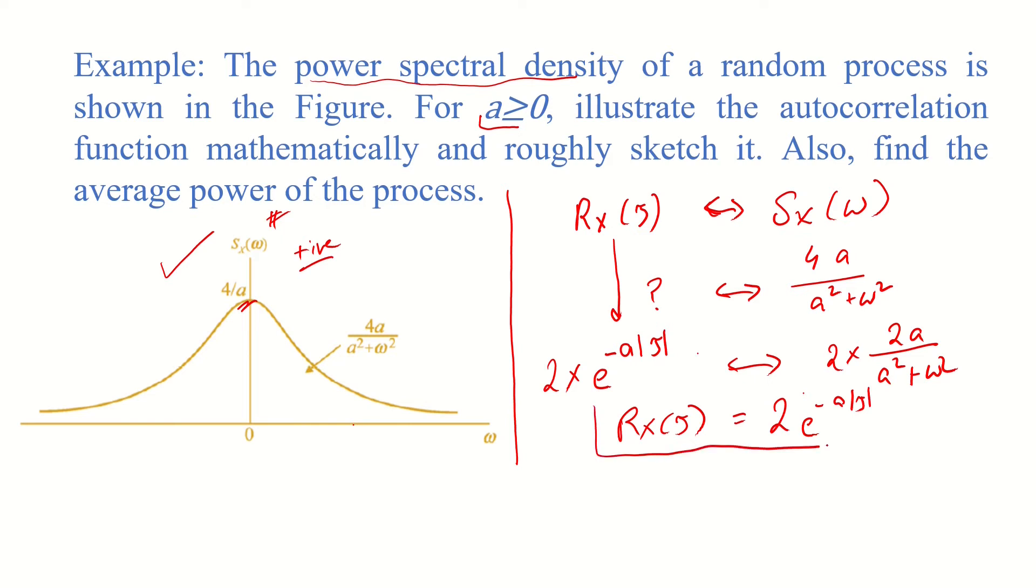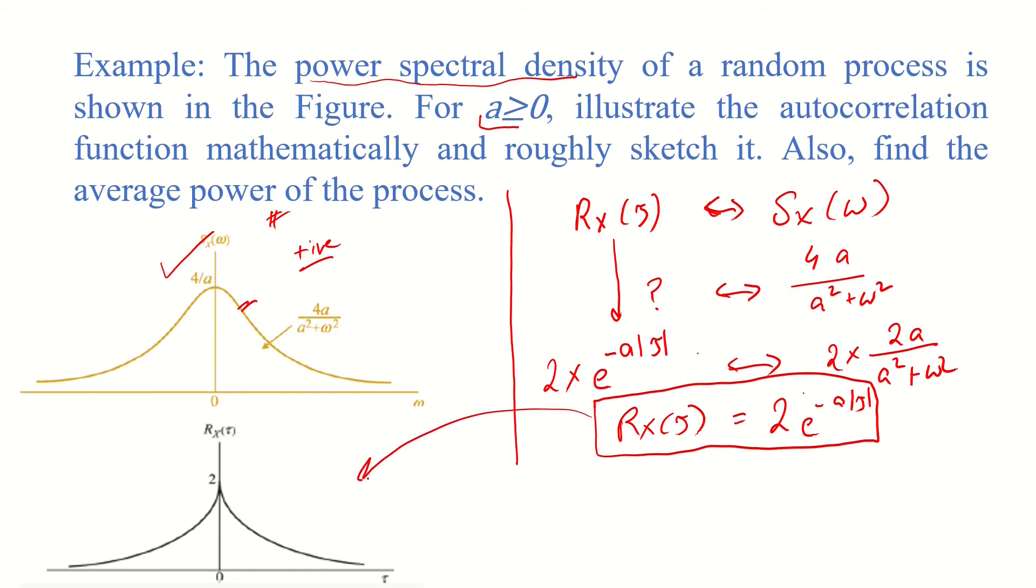This is our autocorrelation function which is plotted over here in the black curve. So this is simply 2e raised to the power minus a absolute value of tau. We are done with the sketching part.